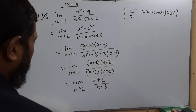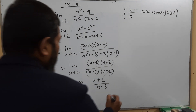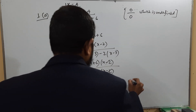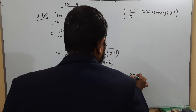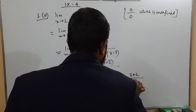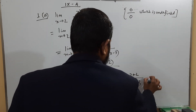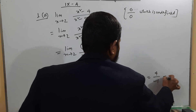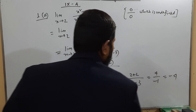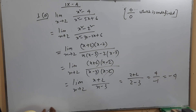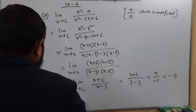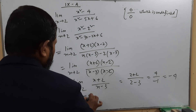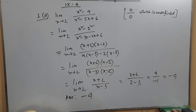Now we put x equal to 2: (2 + 2) / (2 − 3) = 4 / (−1) = −4. The answer is −4.